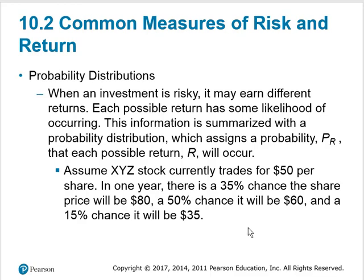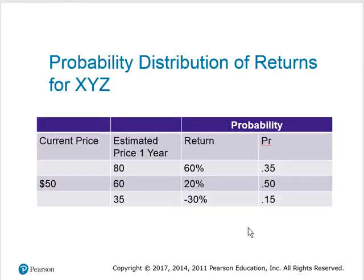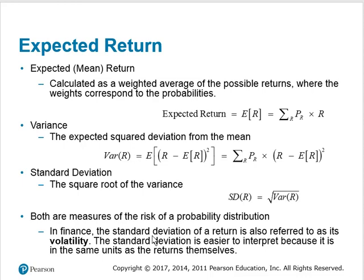...that the stock could go to $80, a 50% chance it could stay at $60, and a 15% chance it would actually go to $35. Looking at the table: if the price goes from $50 to $80, that is a 60% rate of return; $50 to $35 is a negative 30% return. The probabilities represent the chances that these events will happen. From this distribution of returns we want to talk about how we measure risk.